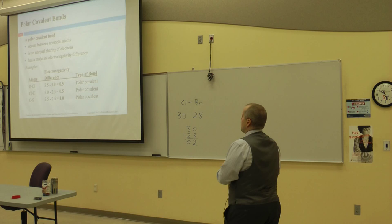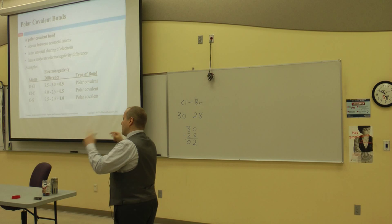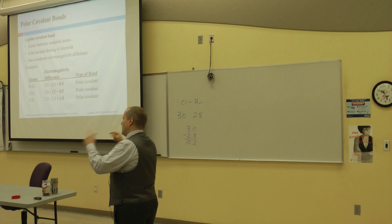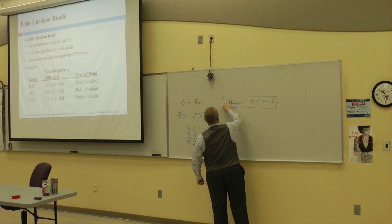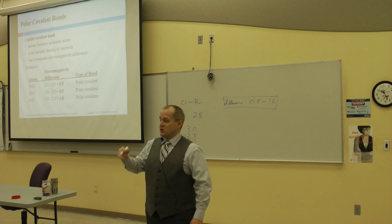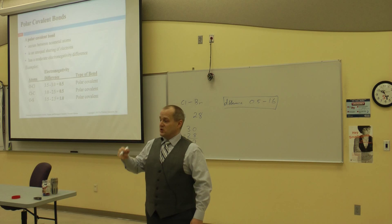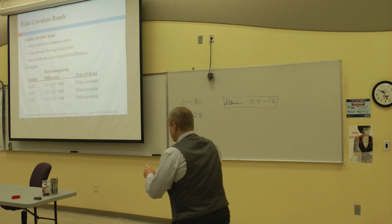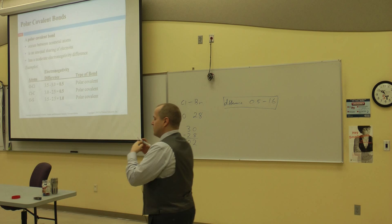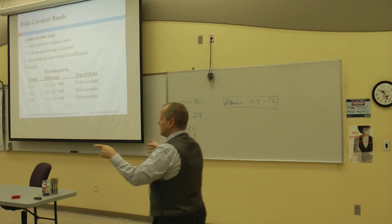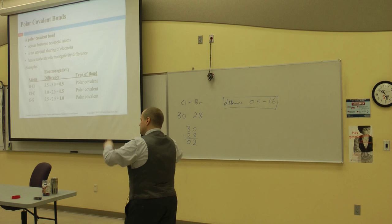Polar covalent is the opposite of nonpolar covalent. If you are polar covalent, you have an electronegativity difference between 0.5 and 1.6. Any greater than 1.6, you're considered to be ionic. If you are polar covalent, there is an unequal sharing of electrons, which means one of the atoms has the electrons more of the time. The difference in electronegativity will be 0.5 to 1.6 if you are polar covalent.